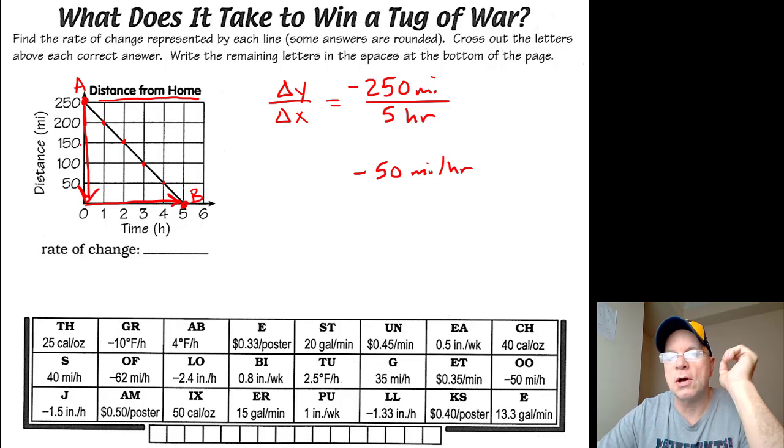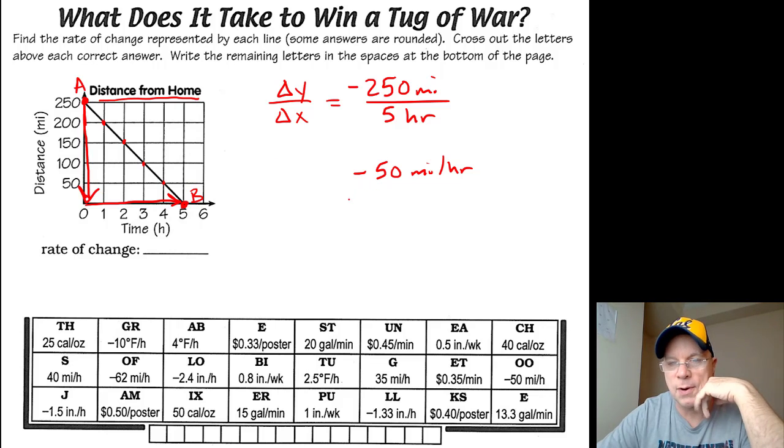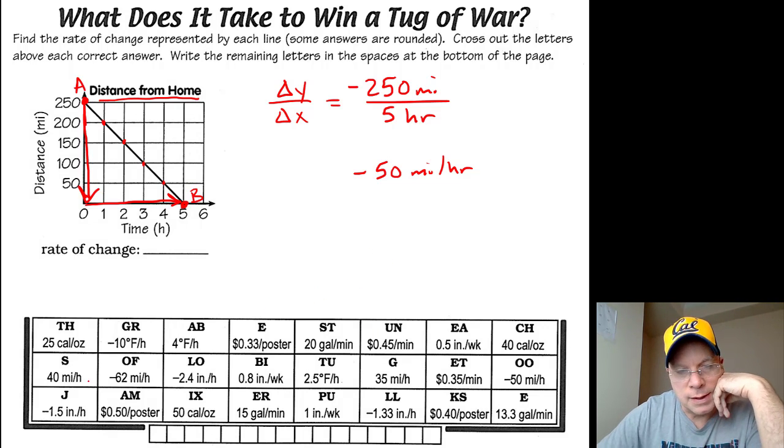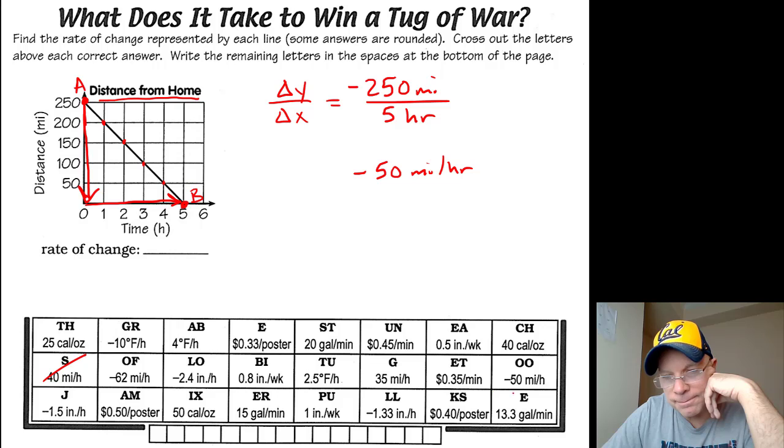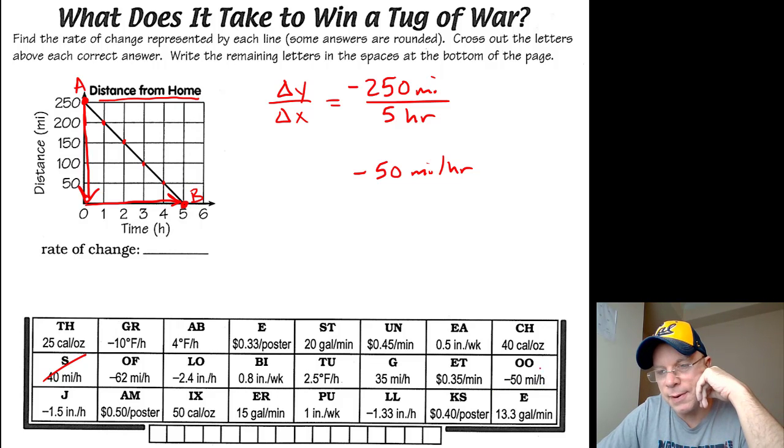It's that when you start the trip, you're 250 miles away from your home, and your distance away from your home is decreasing. So that's where that negative comes from on this problem. You're getting closer and closer to home—the distance is going down, not going up as you travel. And so, as I scan these answers, we know we've already found this one. There it is: negative 50 miles per hour.